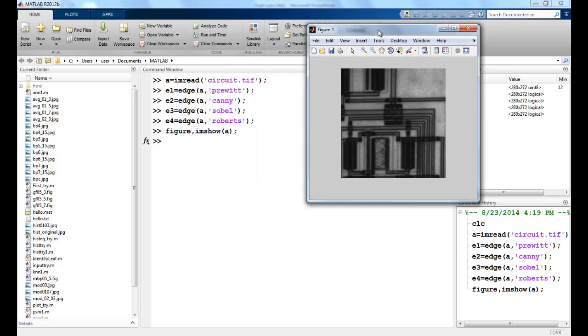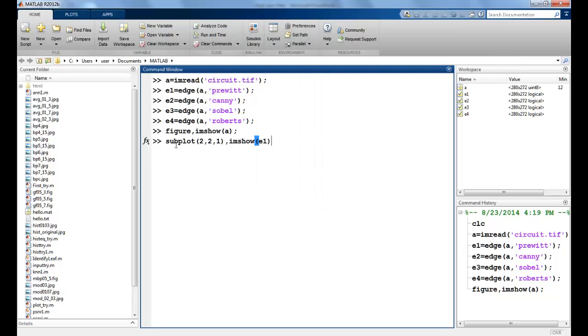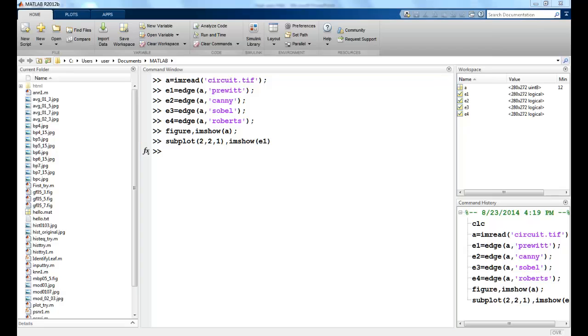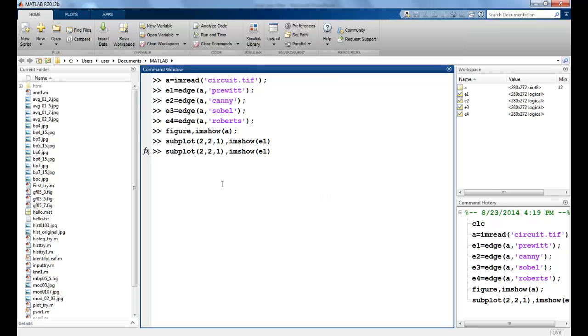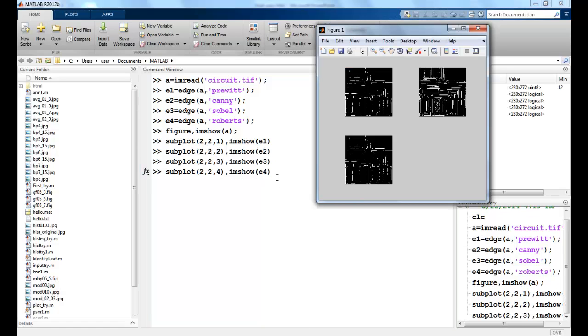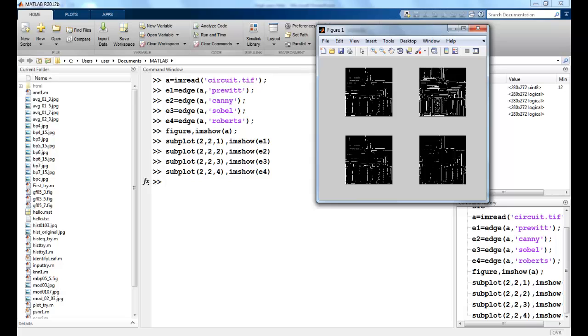Now I can see my image. I subplot all of these in the figure. So you can easily see that this is what I am getting from the Prewitt, this is from Canny, this is from Sobel, and this is from Roberts.